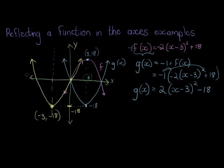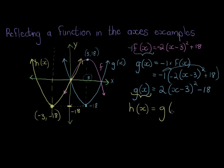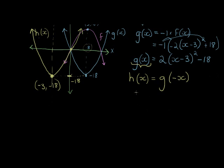Let's call this one h(x). H(x) is the reflection of g(x) in the y-axis. Remember, every x value that was positive now becomes negative, or that was negative becomes positive. So h(x) is the same as g(x), but every x value gets multiplied by negative 1. That means everywhere I see an x I must replace it with negative x. So instead of x I must write negative x, minus 3.